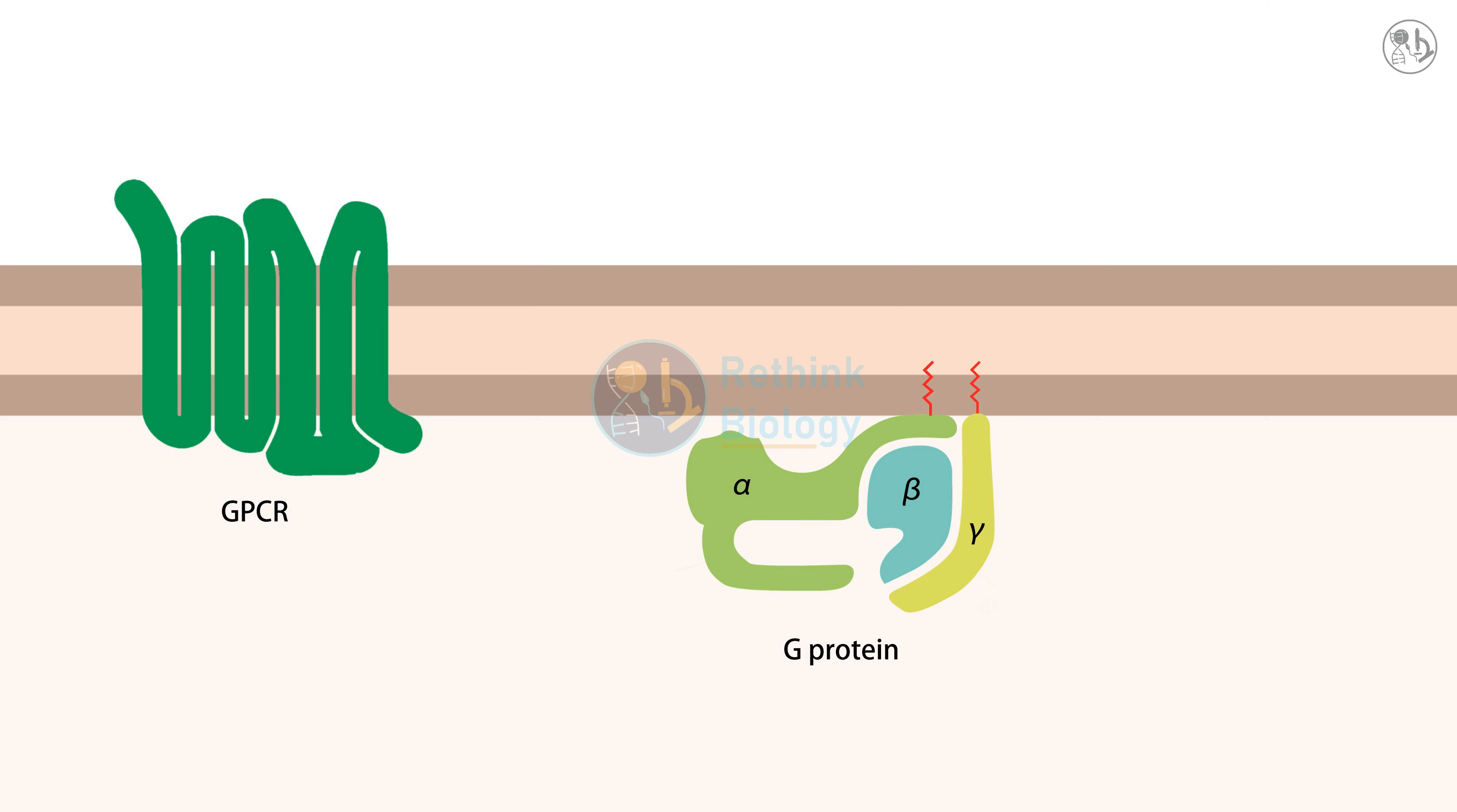GPCRs are proteins that span the plasma membrane seven times forming a cylindrical shape. They can bind to various types of molecules such as hormones, neurotransmitters, and light. Depending on the type of ligand, GPCRs have different structures and functions.